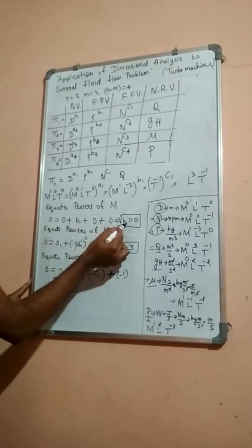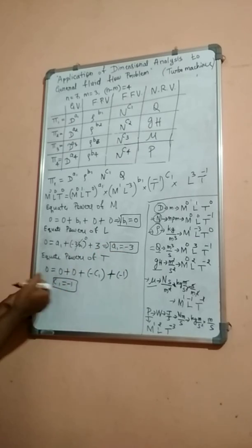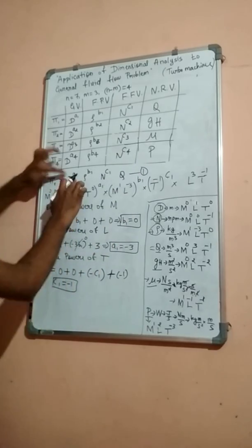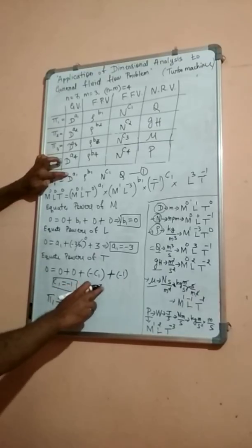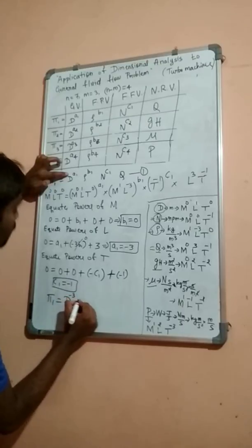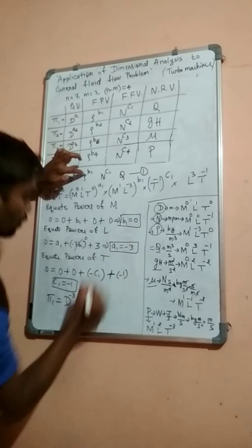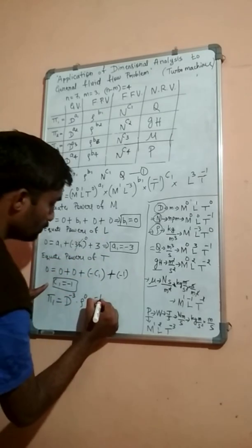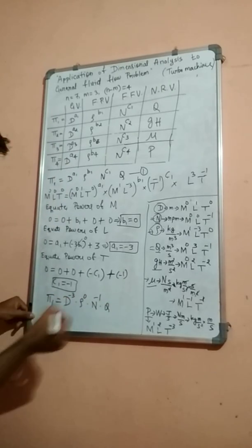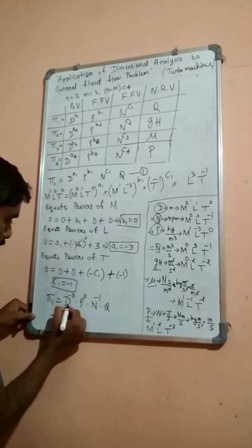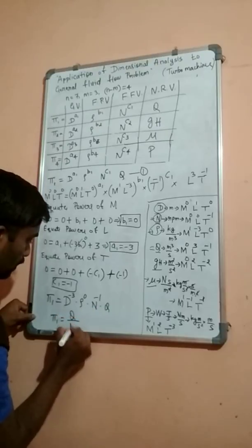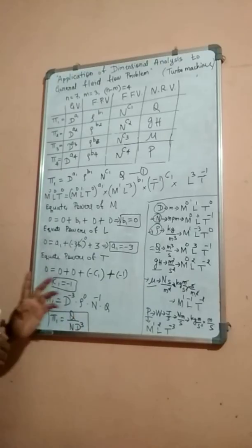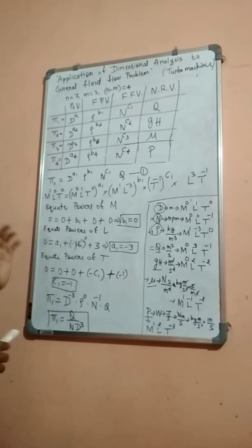Now we have all constant values: A1 is minus 3, B1 is 0, C1 is minus 1. Substituting into the Pi 1 equation: Pi 1 equals D raise to minus 3, rho raise to 0, N raise to minus 1, times Q. Simplifying, rho raise to 0 is 1, D minus 3 goes to the denominator, and N minus 1 goes to the denominator. So Pi 1 equals Q divided by N times D cube. Similarly, we can obtain Pi 2, Pi 3, and Pi 4 terms.